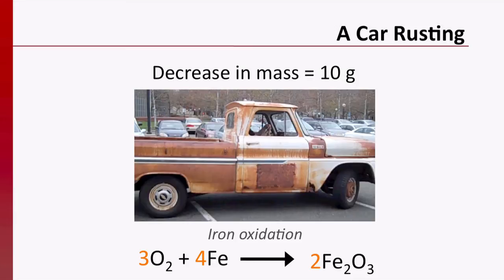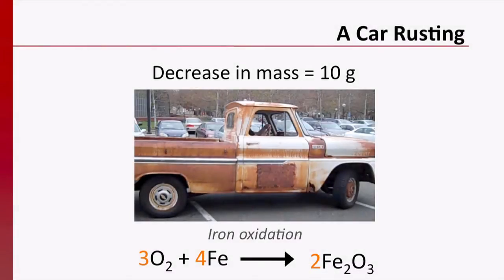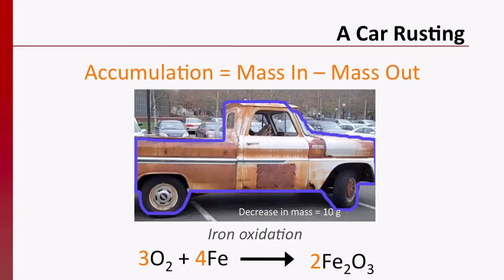Now, please take a minute to think about what control volume we might specify to apply the law of mass conservation to the rusting car. If we define the car as our system or control volume, the concept that we introduced earlier, we can perform a mass balance on the car. Remember, any mass that is accumulated in our system should equal any mass that entered the system minus any mass that left the system.